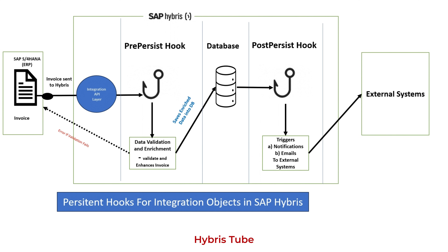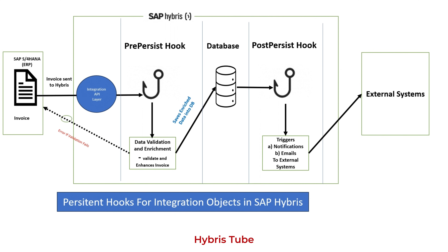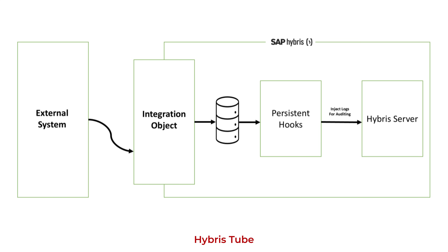The second example is data enrichment — sometimes external systems don't send SEO keywords or derived attributes, so we can auto-generate them before save using a pre-persist hook. The third scenario is business triggers — for example, once an invoice is saved into the Hybris database, we want to notify the ERP that the invoice has been saved successfully, or send an email. That's the perfect case for a post-persist hook.